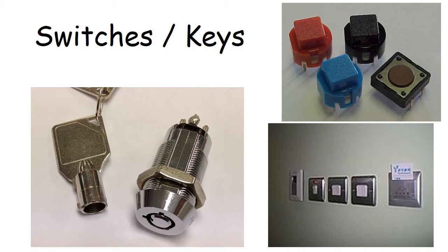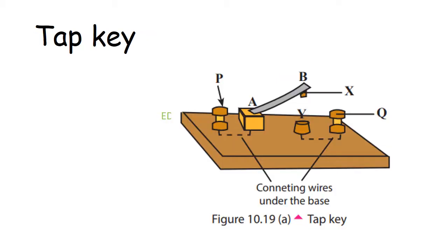Now let's study those simple keys. The first one is the tap key. Here you can see the tap key in the figure. Observe the diagram carefully. Here B and Q are the terminals connected to the circuit.